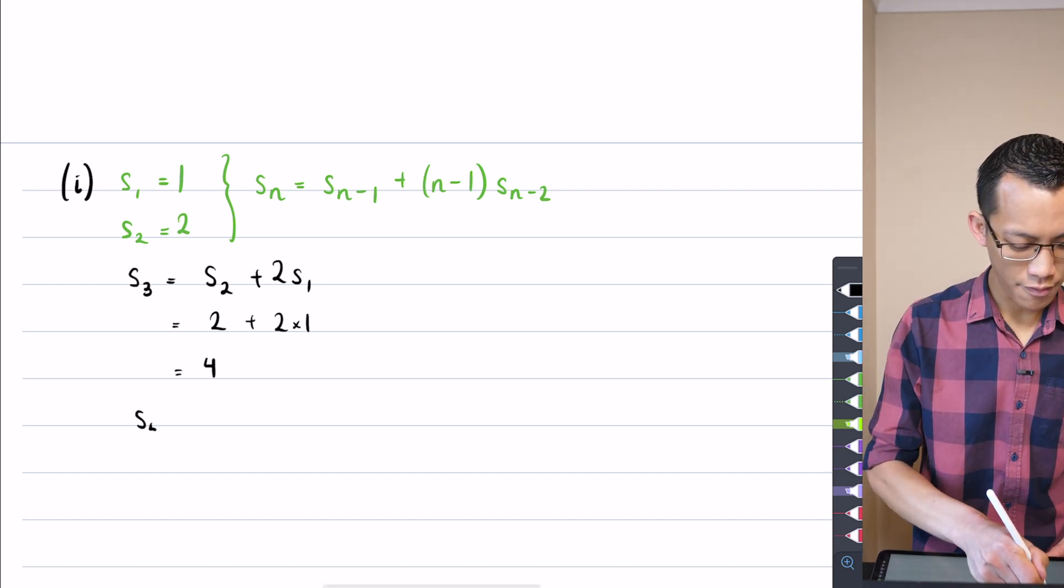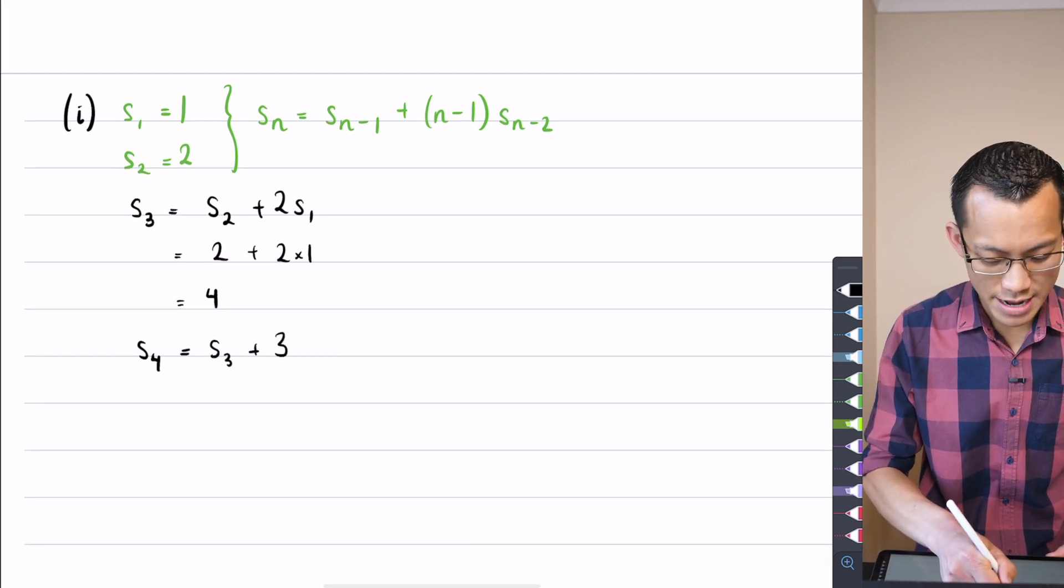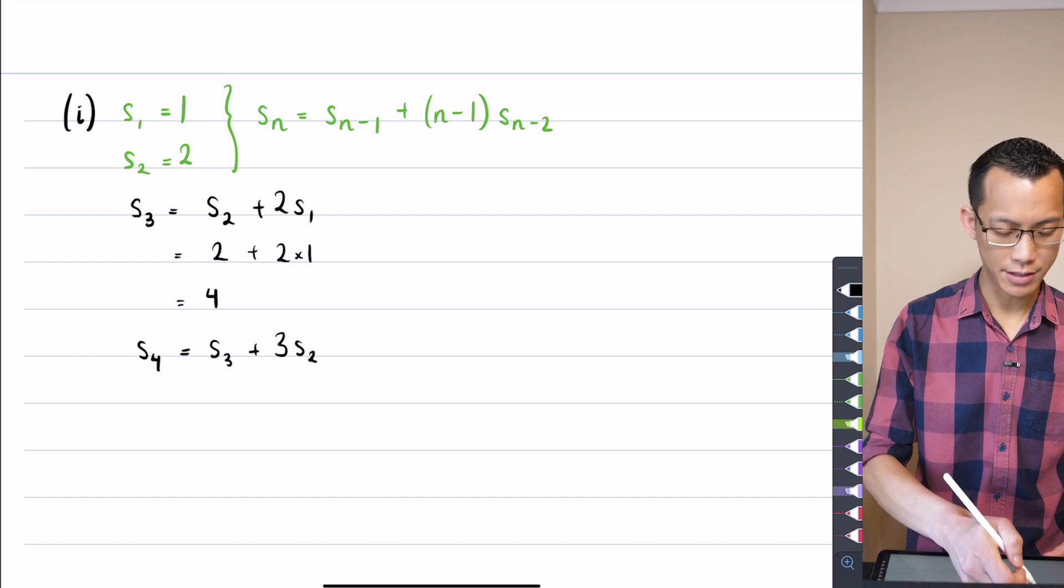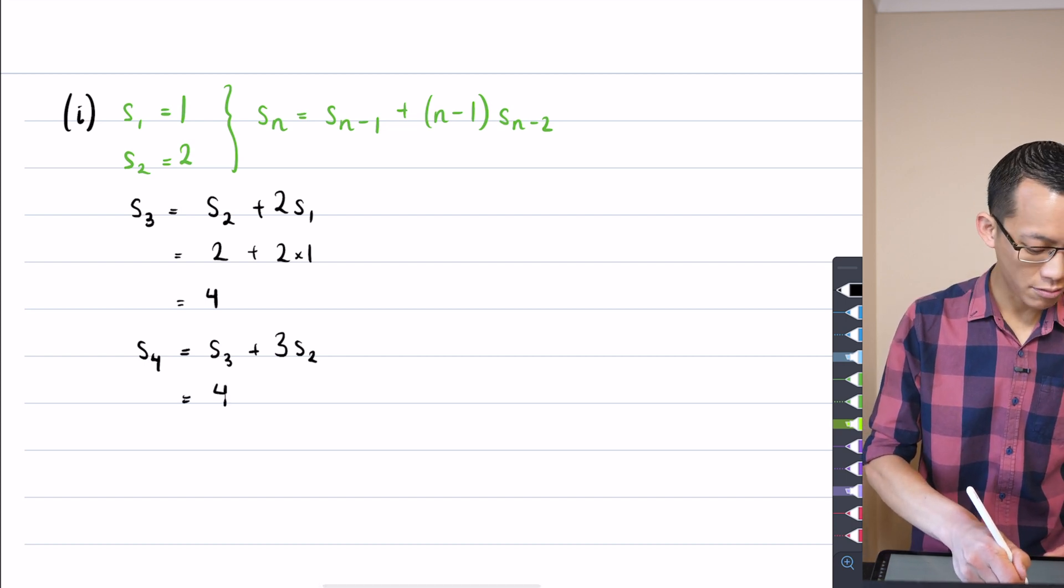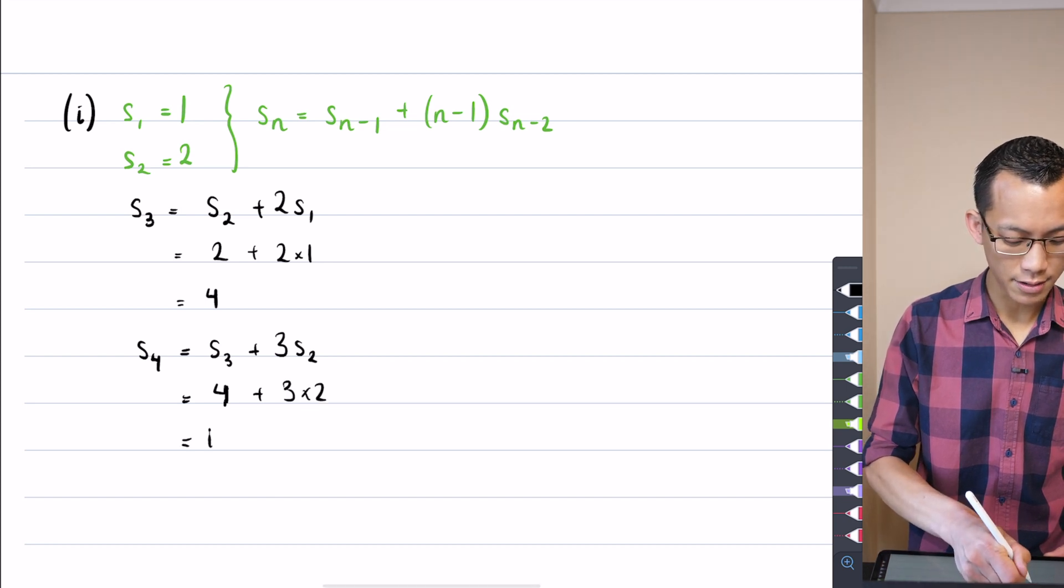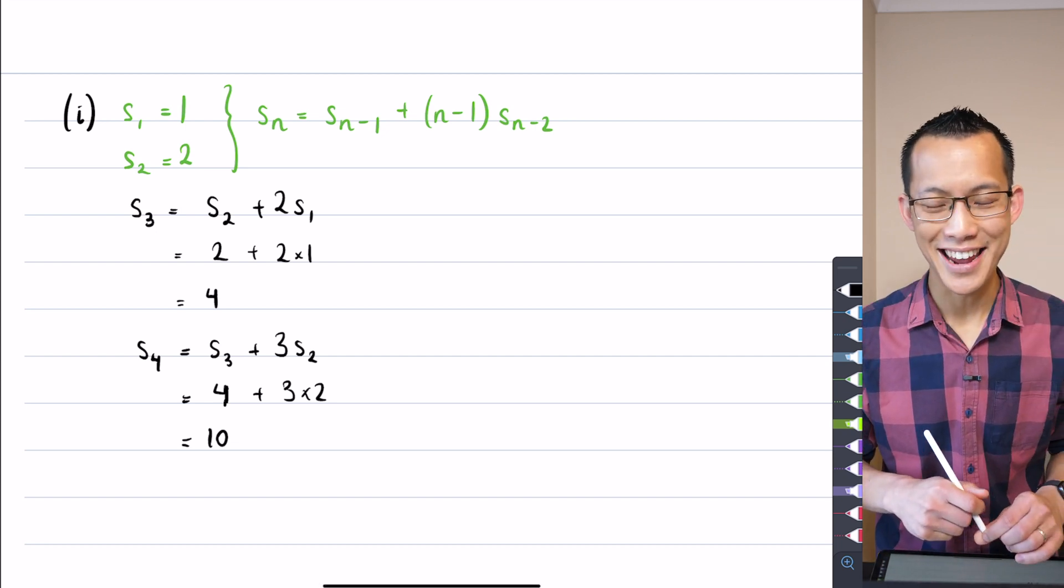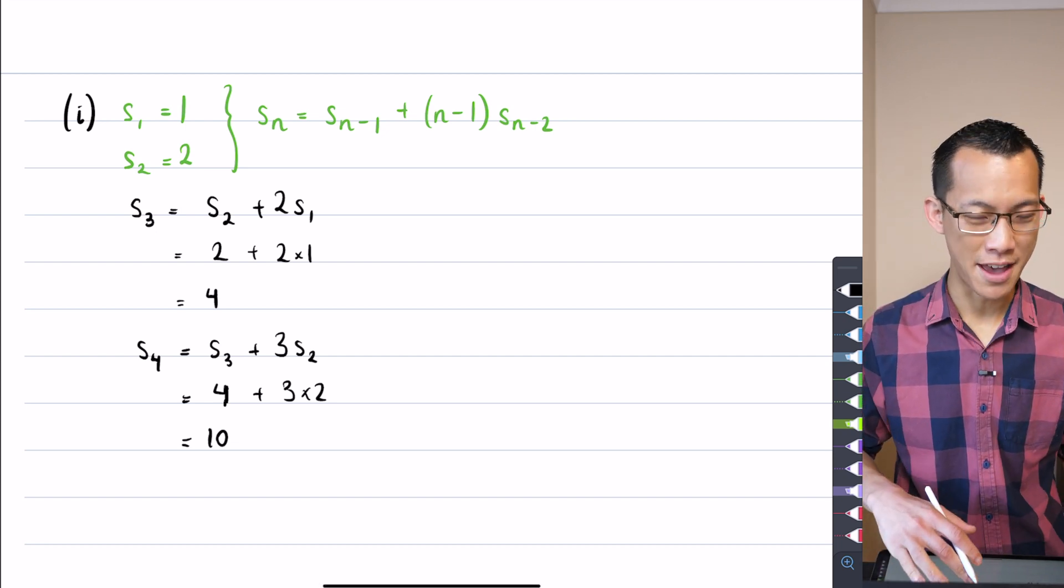And then you just rehearse that logic for S_4, so you say, well, it's the previous term and it's three lots of the term before that. So you're going to get, we just worked out S_3, which is four, and this is going to be three lots of two, so you get ten. You can see why this is just one mark, potentially one of the easiest marks in any extension to a four unit exam ever.